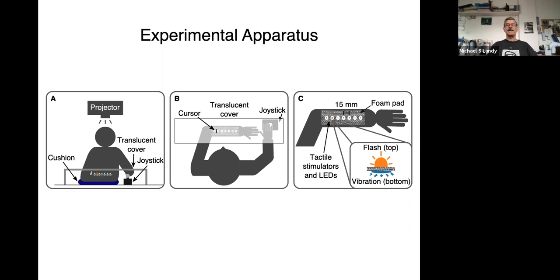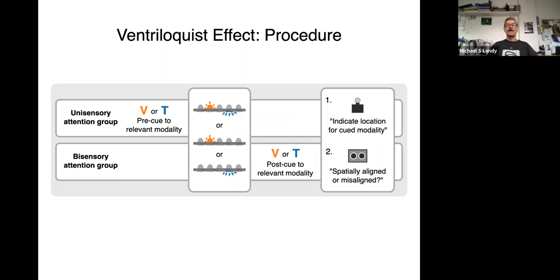So in the experiment, we're going to study the effect of attention on the ventriloquist effect. So we're going to either show you a flash, show you a buzz, show you both co-located or not. And we're going to ask you to localize one of them. And we may ask you which modality in advance of the stimulus, in which case you can ignore the other stimulus, or we may tell you which modality to report after the stimulus, in which case you are forced to attend to both of them. And so that's the attention manipulation.